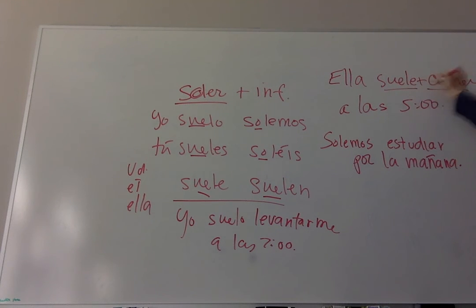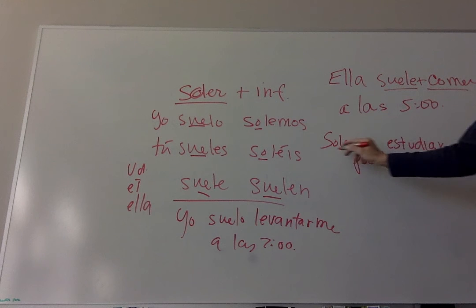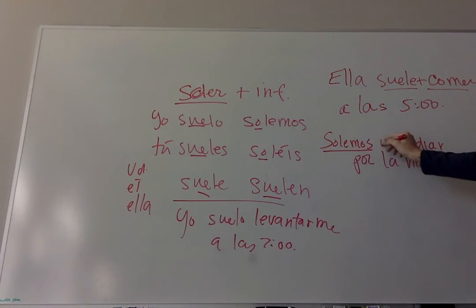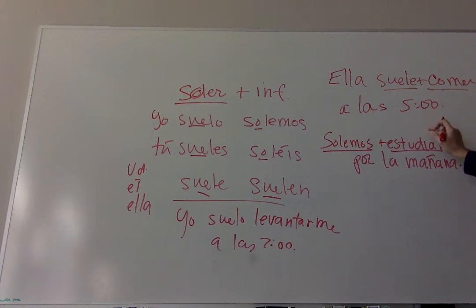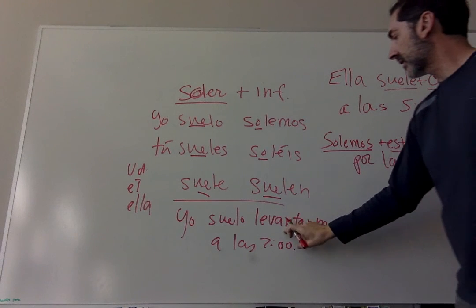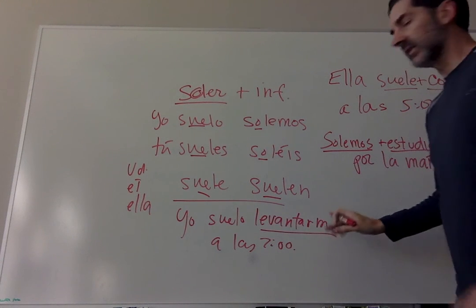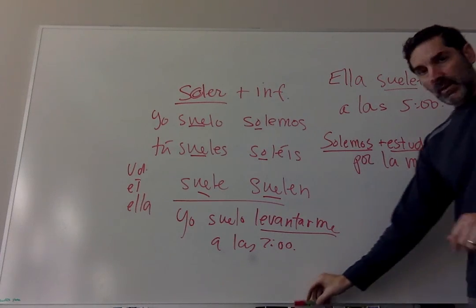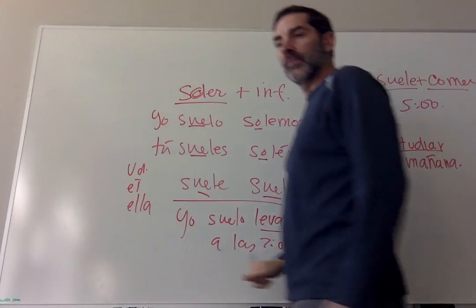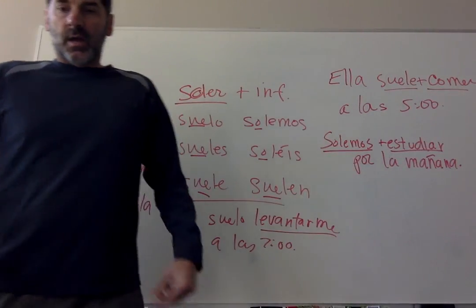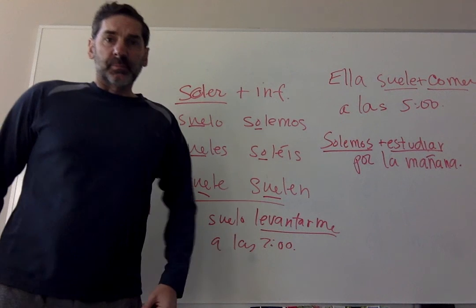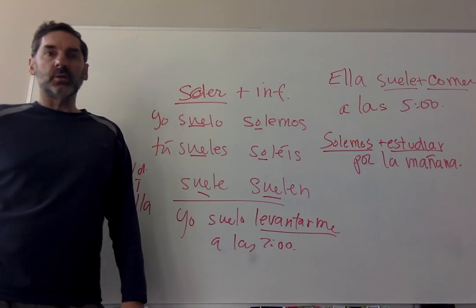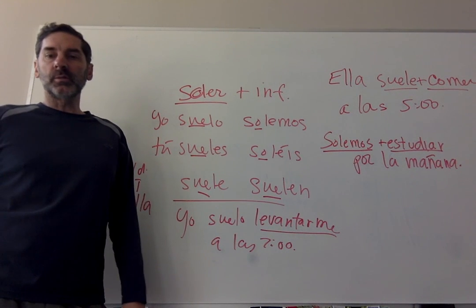Conjugate your verb, then add your infinitive. Do not conjugate the second verb — just leave it alone. Same pattern as ir plus a plus infinitive, and the same thing with gustar. You'll see that explained again on page 172 in your textbook, Ritmos.